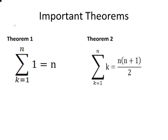Before we begin we should remind ourselves of some very important theorems that we're going to use. For example, theorem 1: the summation of the constant value 1, n times, will give us n. The summation of k, n times, where k increments from 1 to n, is given by that expression there.